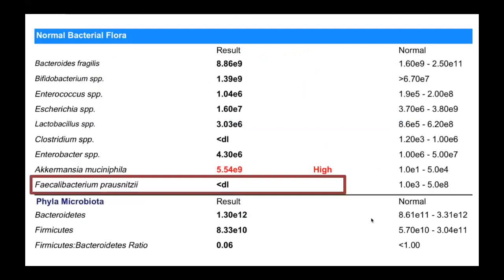Looking at the normal bacterial flora section, Faecalibacterium prausnitzii is highlighted — one of the research articles noted that low stomach acid from H. pylori can have a negative impact on this important butyrate-producing bacteria, and indeed it is low in this case. Akkermansia above it is generally considered beneficial, though when overgrown it has some health implications. Clinically, elevated Akkermansia tends to be part of a pattern reflecting reduced digestion, and it is commonly seen elevated when H. pylori is present.